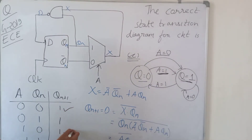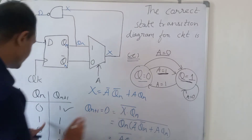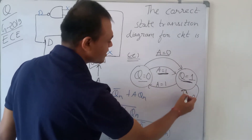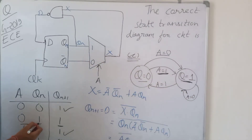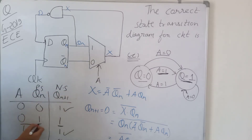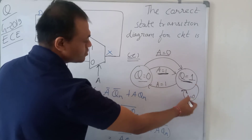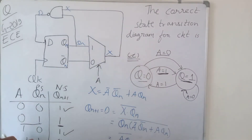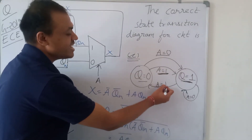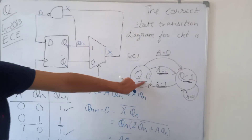When a = 0 and Qn = 1, next state is also 1, so it is a self-loop at Q = 1 for a = 0. When a = 1 and Qn = 1, next state Qn+1 = 0. So from Q = 1 with a = 1, the machine transitions to Q = 0.